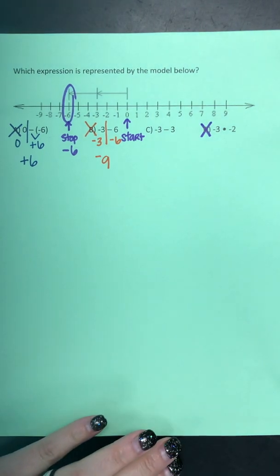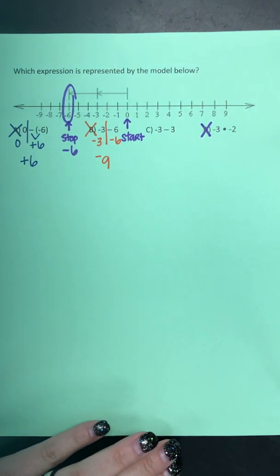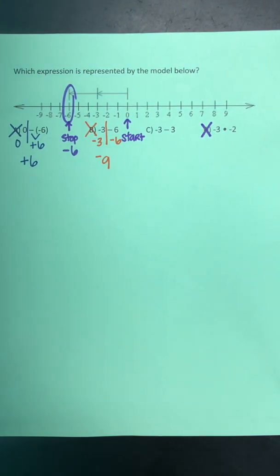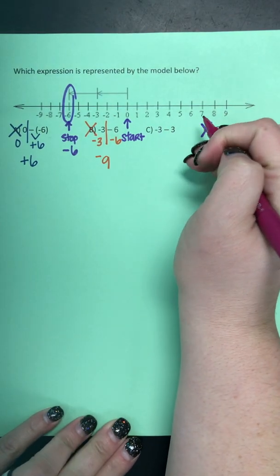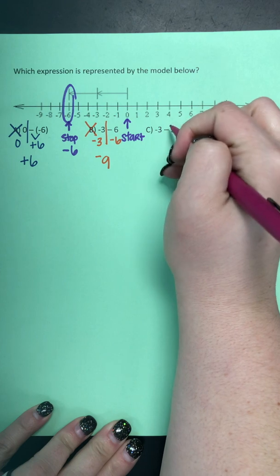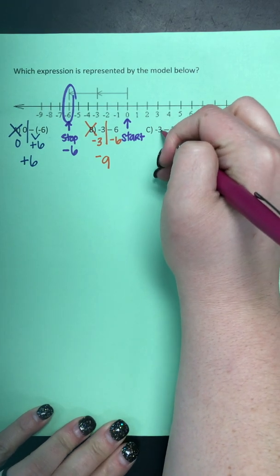So hopefully when we solve letter C, it is going to be the correct answer. So letter choice C says negative three minus three. So again, subtracting, I have some negatives. I need to sing my song.